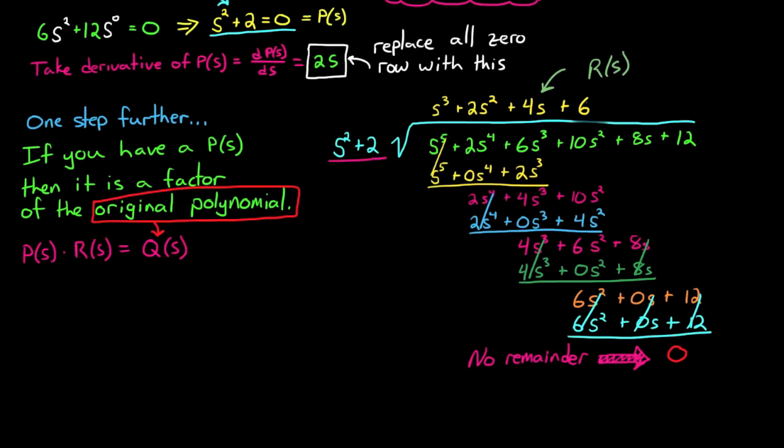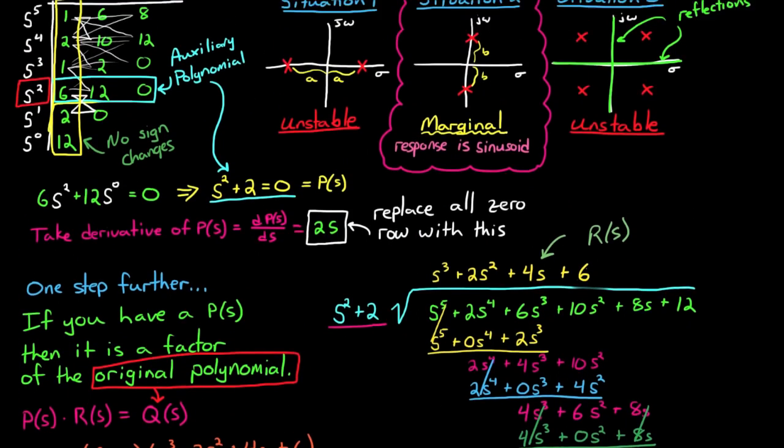Now remember that this is only true if there's a row of zeros in your routh array. Otherwise you'll be left with some non-zero remainder.